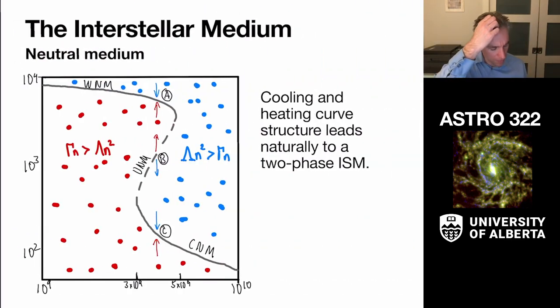we actually get to the idea of a two-phase interstellar medium from the structure, the basically the functional forms of these heating and these cooling rates. And so this is a little bit of a complicated diagram that I kind of want to work through here in some details here.